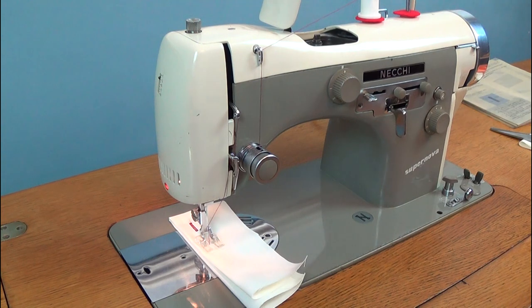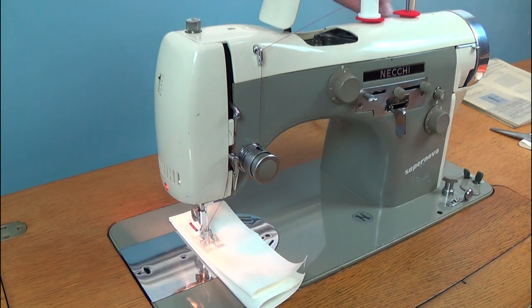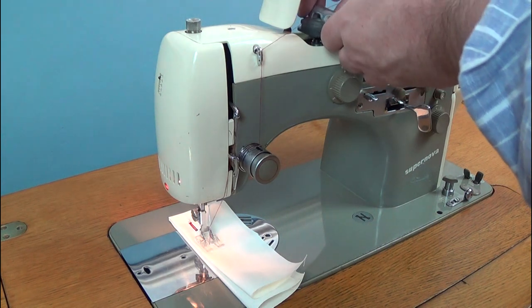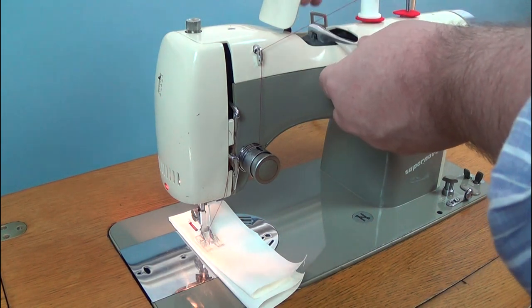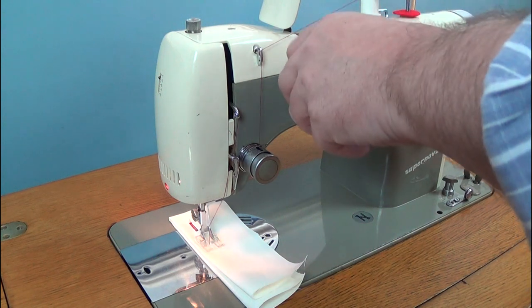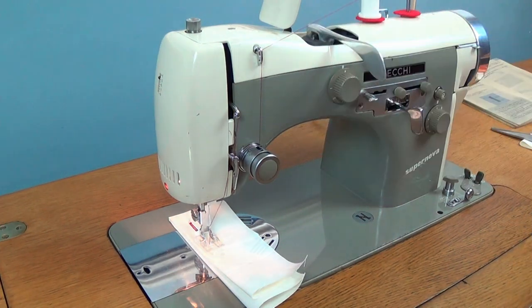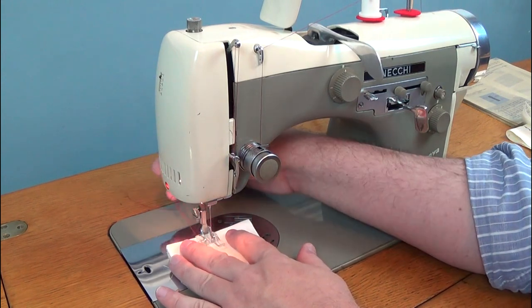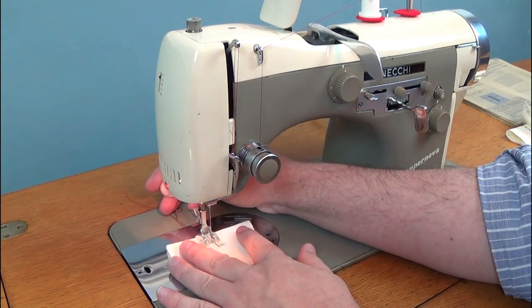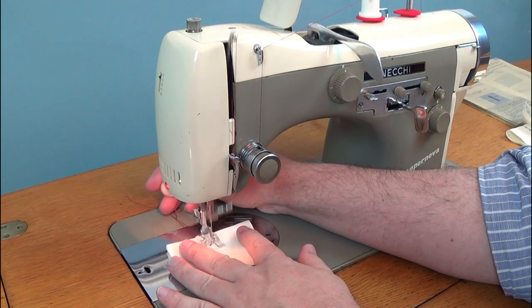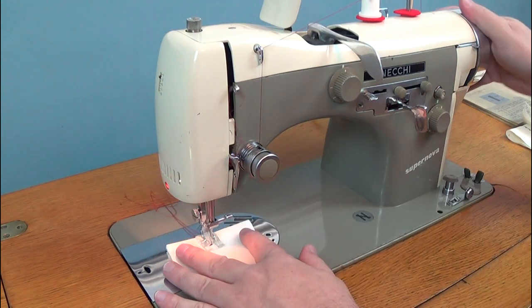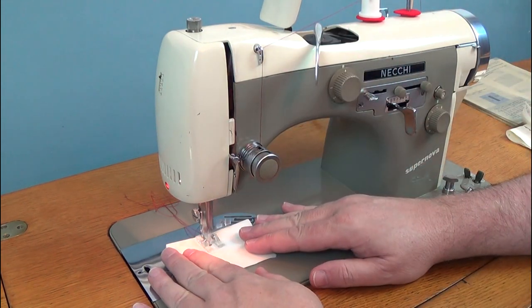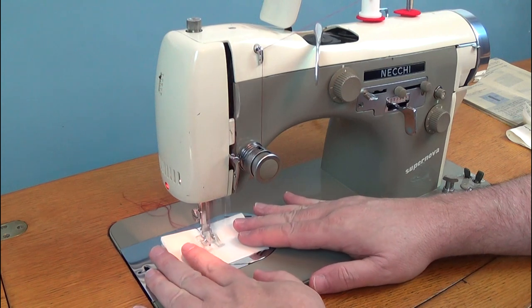To make a buttonhole move the cam follower lever over and place the buttonhole cam in the machine. Move the cam follower lever back. Set the stitch length close to zero and use a special clear buttonhole presser foot. Place a piece of fabric under the presser foot and starting with the buttonhole handle in the centre make a couple of bar tack stitches. Move the lever to the left and sew until you get the length of the buttonhole you require.